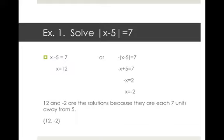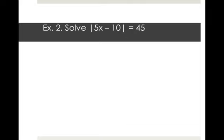The solution set is {12, negative 2} — that notation is called solution set notation. For example 2, we're going to solve absolute value of 5x minus 10 equals 45. We write two statements: 5x minus 10 equals 45, or negative quantity 5x minus 10 equals 45. We'll solve each equation and then test each solution.